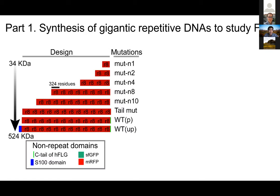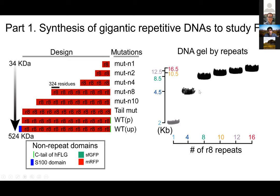For the first part, we make genes encoding different kinds of repetitive proteins that look like filaggrin. R8 is a sequence taken from human filaggrin — the eighth repeat — which looks very similar to repeats 10, 8, 7, and 6 because they're very similar in composition. We can make many copies of those repeats. At any iteration of this assembly process, we can add different non-repeat domains — fluorescent proteins to follow behavior, the S100 domain which is the only structured part of the protein (known to be a dimerization domain). These are really large genes — about 16–17 kilobases in size.